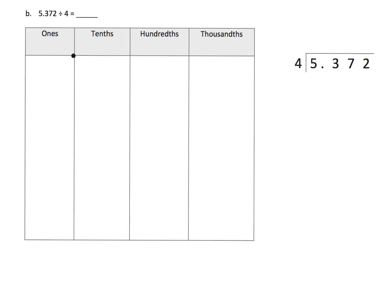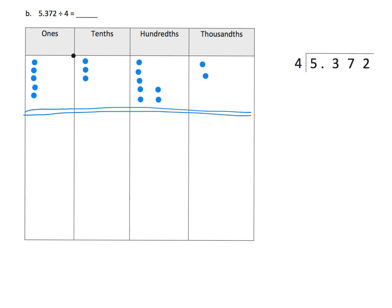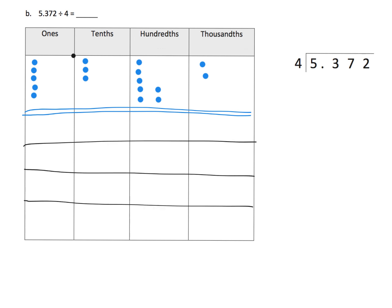For the next problem, I'm not going to entirely solve it — just set it up. We begin with 5 ones, 3 tenths, 7 hundredths, and 2 thousandths, placing them in 4 groups. We draw 4 groups at the bottom because we're dividing by 4. From here, you begin sorting your dots into 4 groups, cashing leftovers into the column to the right, and connecting each step with the standard algorithm.